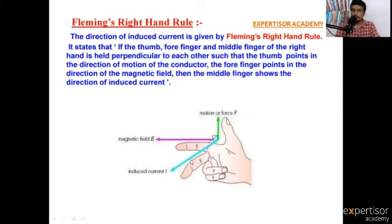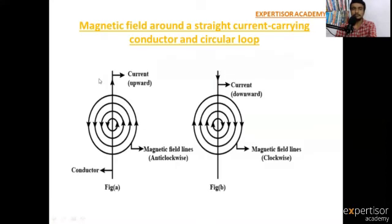Fleming's right-hand rule and Fleming's left-hand rule: for the left hand, the thumb indicates the direction of the force or motion, the forefinger of the left hand indicates the magnetic field, and the middle finger indicates the direction of current. That is the information covered in this video: magnetic field around a straight current-carrying conductor and circular loop.